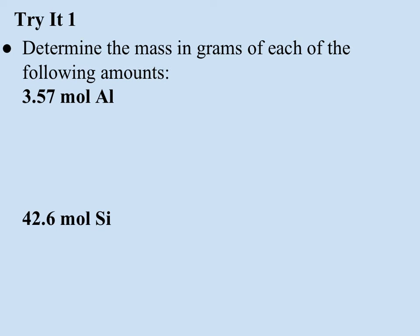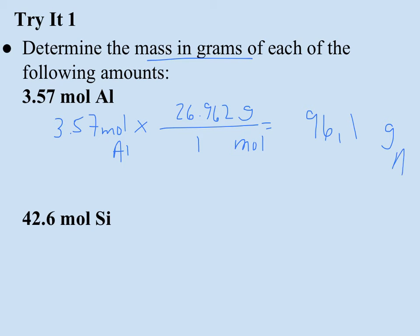We're going to convert 3.57 moles of aluminum into the mass in grams. So I have 3.57 moles of aluminum. I want grams. I put grams over moles. I look up the mass for 1 mole of aluminum and I see that it is 26.962. And when I take 3.57 times 26.92 and round that to 3 sig figs, I'm coming up with 96.1 grams of aluminum.